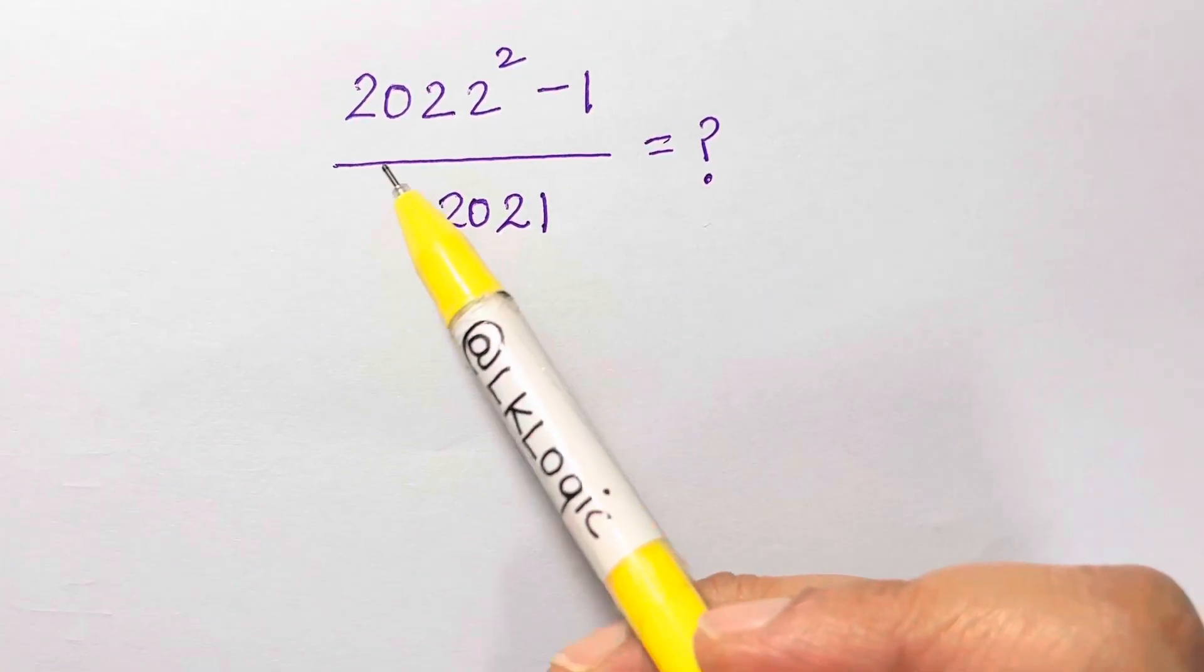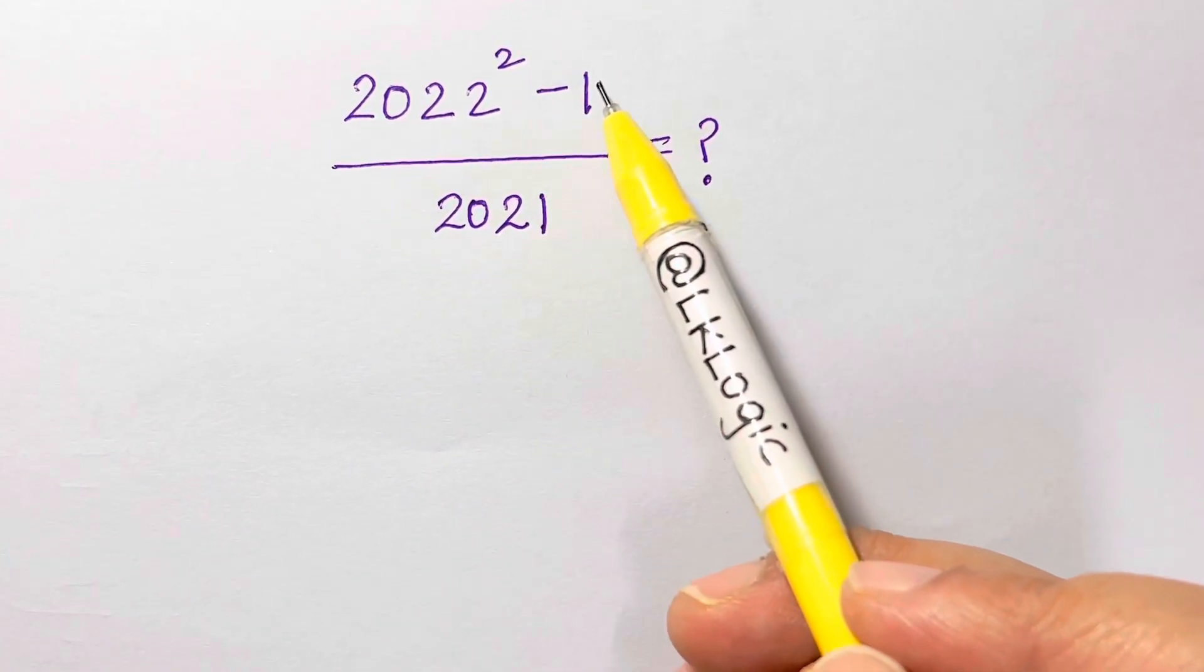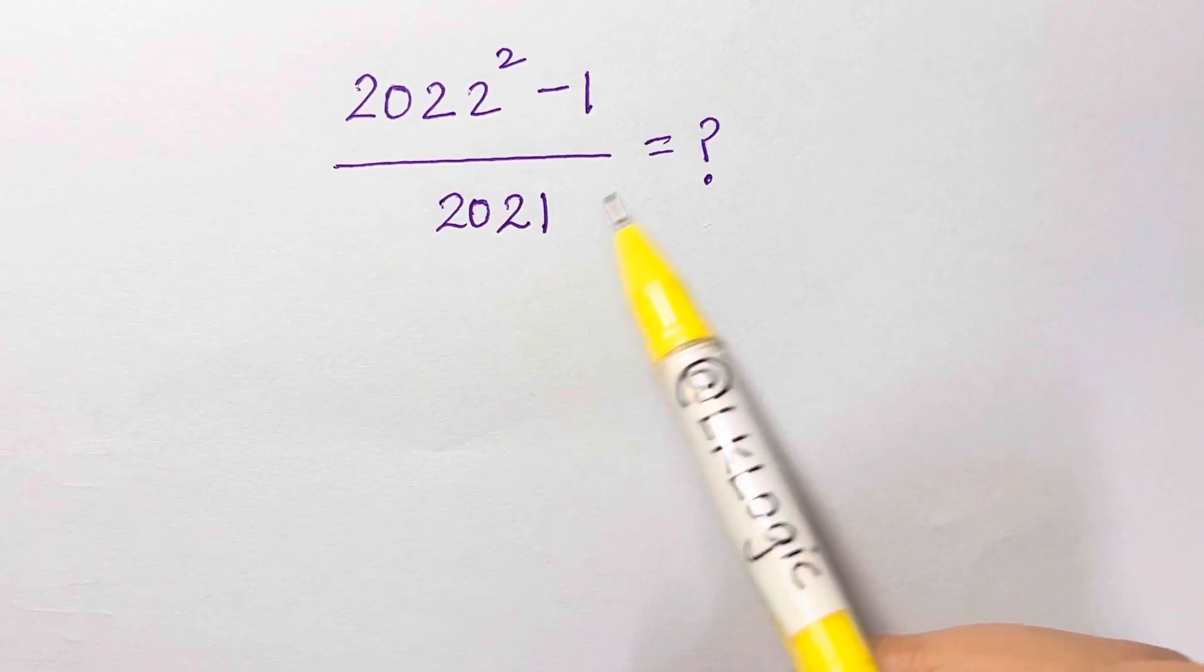Hi guys, let's solve this interesting problem which is 2022 square minus 1 over 2021 equals what?